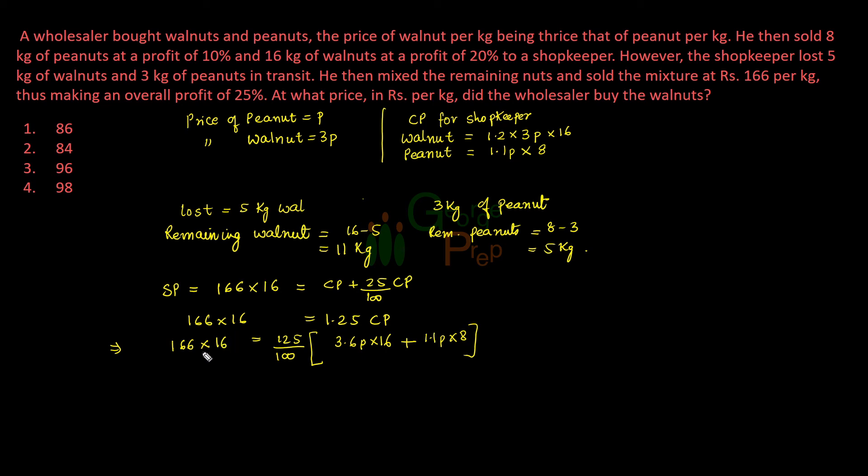Now if we see, we can take 8 common and then cancel out. This 16 will become 166 times 2. This we can cancel out by 25, so 25 times 5 and 25 times 4, so this is 5 by 4. From this we have taken 8 out and canceled, so this will only be 7.2P plus 1.1P.